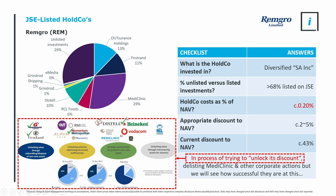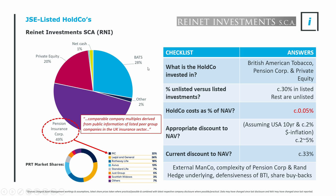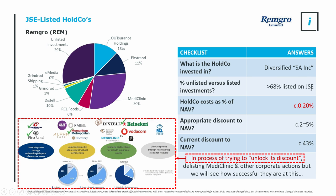Jumping to RemGro: unlike RayNet being a global holdco, RemGro is almost entirely diversified SA Inc, and heavily listed even on the JSE. Quite efficiently run as a holdco — percentage of NAV implies an appropriate discount of 2% to 5%. They're currently trading at a 43% discount, which feels quite onerous. Management is in the process of unlocking the discount — there's a range of transactions, and even this week RCL sold Vector Logistics to try to unlock some value. Even if we're negative on South Africa, a lot of that sentiment is already embedded in the share prices, and this is still heavily discounted against that.